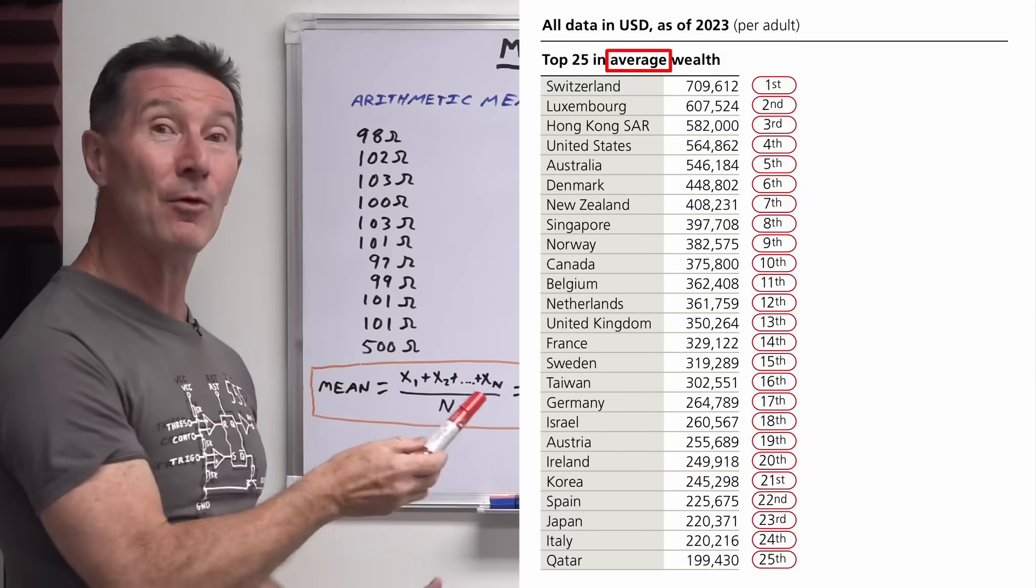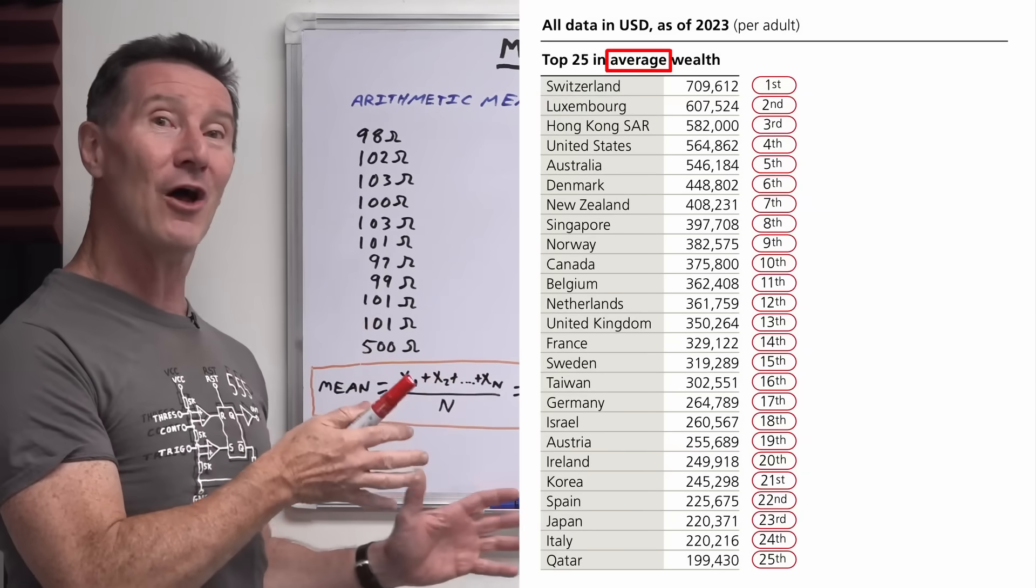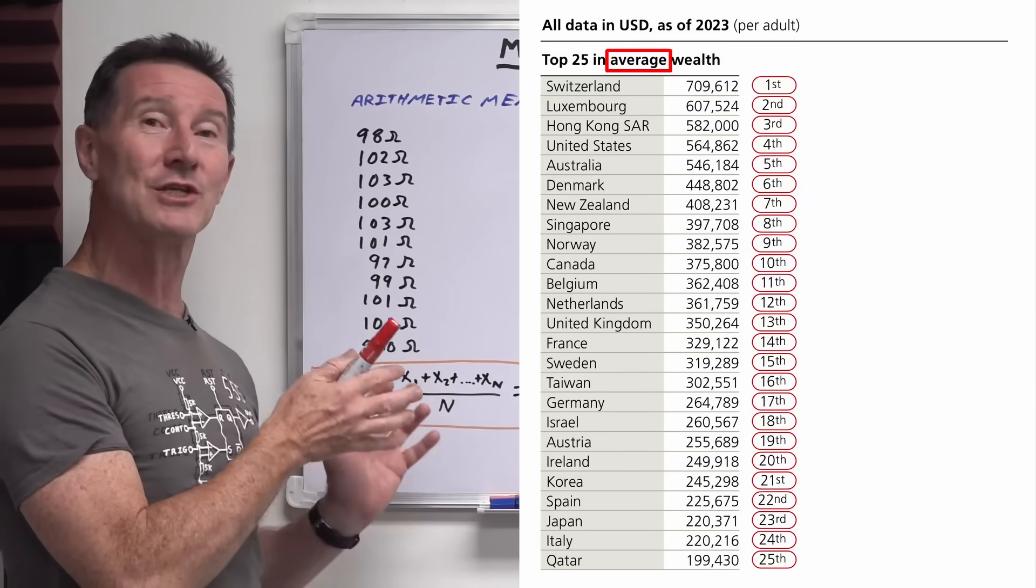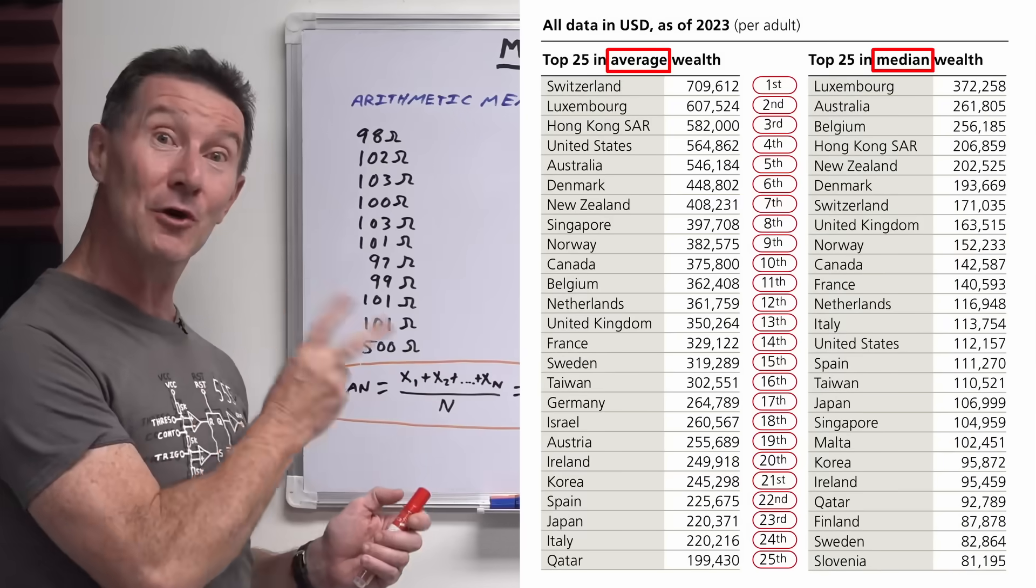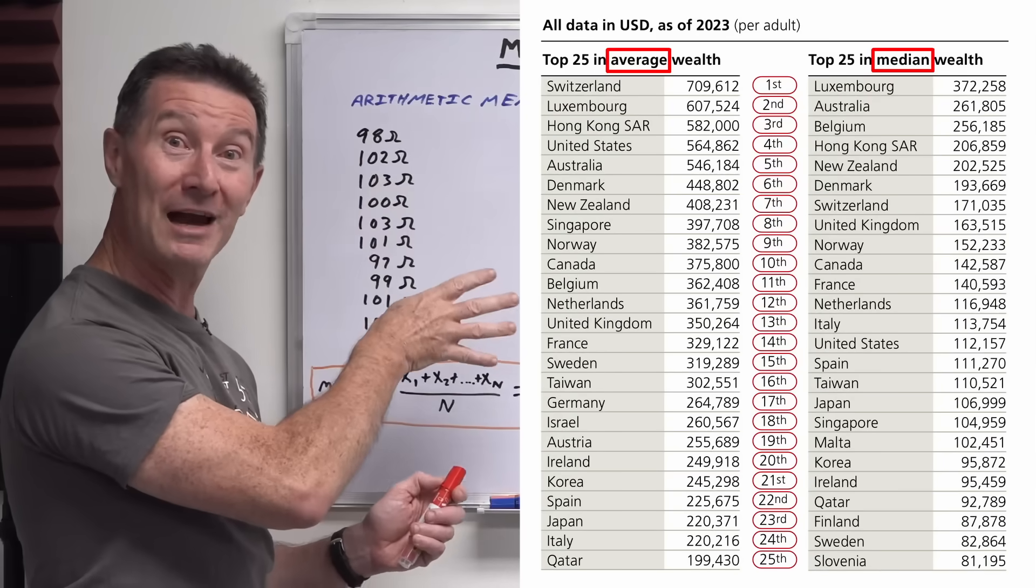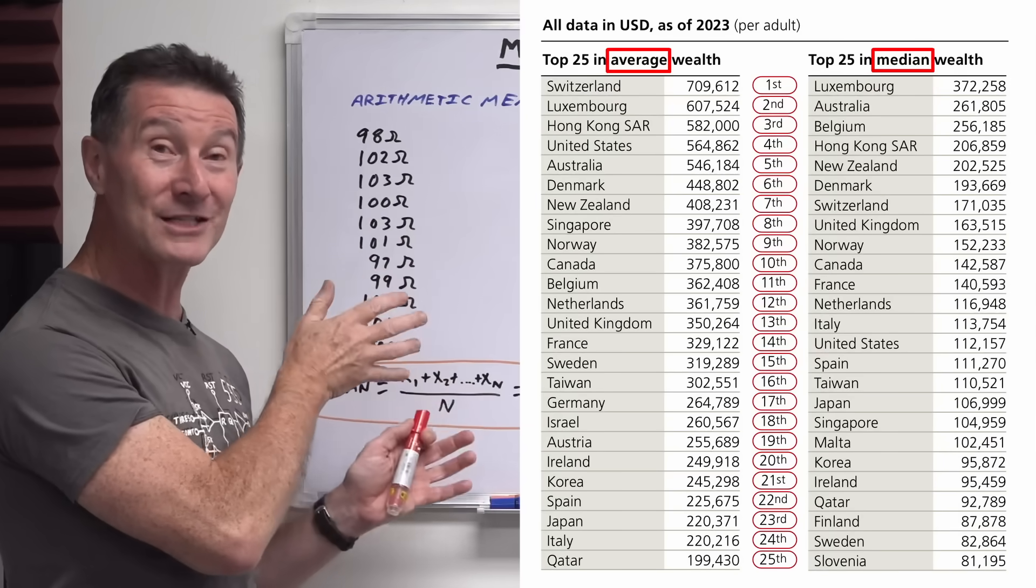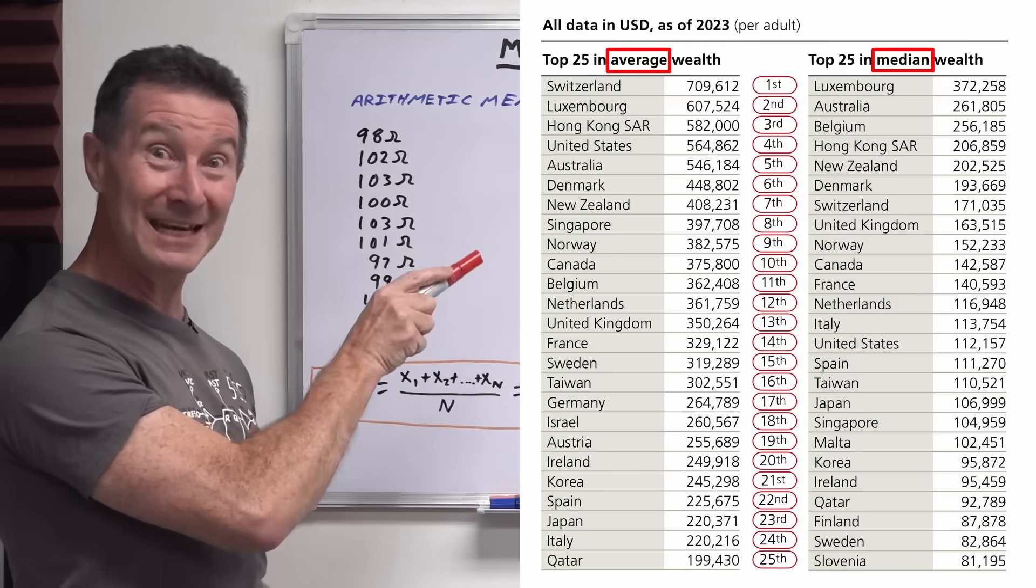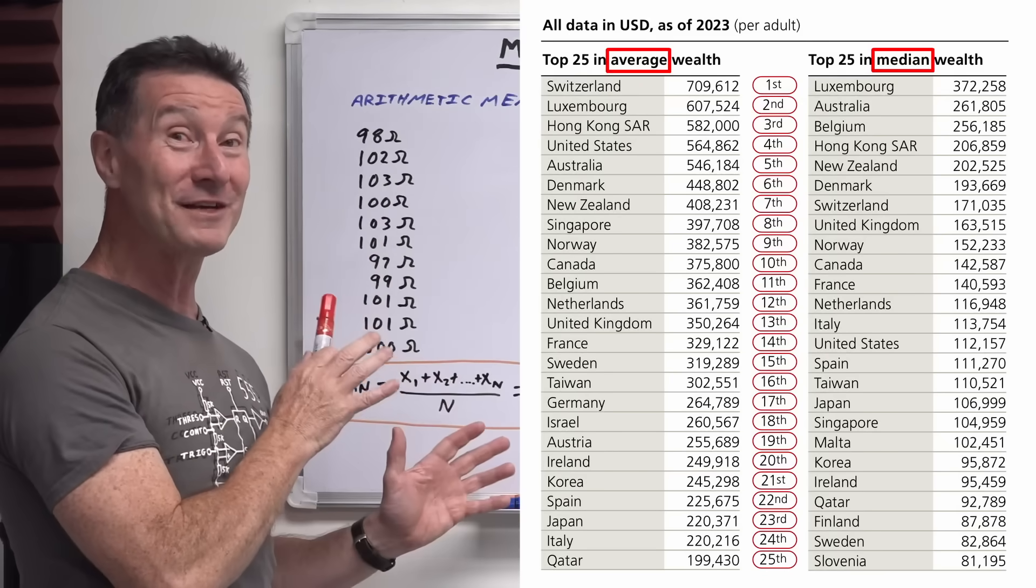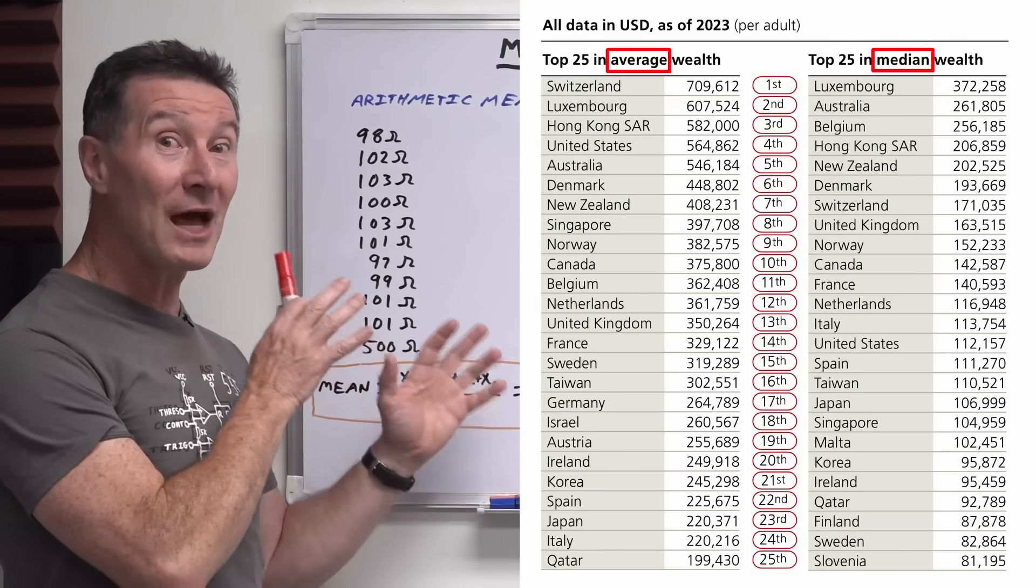But I haven't shown you the full table. In this particular case, UBS know that it's manipulative to actually give you that data. So they give you two sets of data. So here is the full data set, they give you a table right next to it that has the median value.